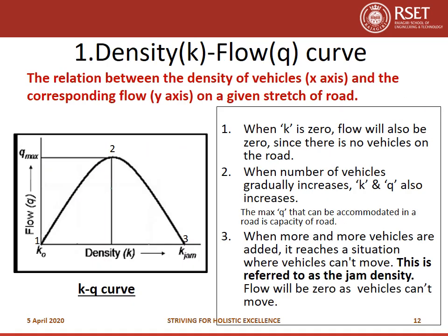The first curve is the density-flow curve, showing the relationship between density and the corresponding flow on a given stretch of road. When density k is 0, flow will also be 0 since there is no vehicle on the road — this is point 1. As the number of vehicles gradually increases, both k and q increase until q reaches a maximum value, marked as point 2. The maximum q that can be accommodated on a road is the capacity of the road.